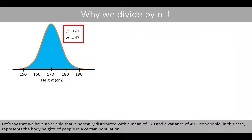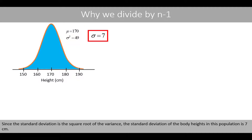Let's say that we have a variable that is normally distributed with a mean of 170 and a variance of 49. The variable in this case represents the body heights of people in a certain population. Since the standard deviation is the square root of the variance, the standard deviation of the body heights in this population is 7 centimeters.